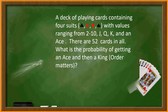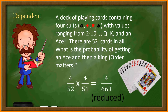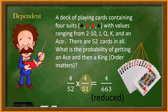A deck of playing cards contains four suits with values ranging from two to ten, jack, queen, king, and an ace — fifty-two cards in all. What is the probability of getting an ace and then a king? Since a card is removed and cannot be used again, the event is dependent. The probability of pulling out an ace is four out of fifty-two because there are four aces in the deck, one of each suit. The probability of dealing a king is four out of fifty-one because there are four kings, one of each suit, out of fifty-one total remaining cards. So the answer will be four fifty-seconds times four fifty-firsts, which is four over 663, reduced.